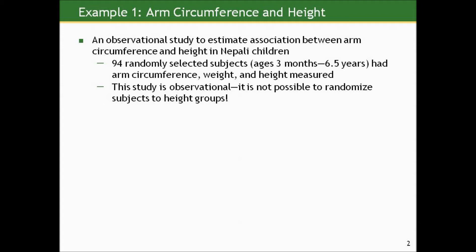Here's an observational study. This was actually done in Nepali children, and one of the aims was to look at the relationship between arm circumference and height in Nepali children — how they were growing and how their anthropometric measures were correlated, and they wanted to compare these to children from other populations. Let's suppose we looked at 94 randomly selected subjects from the study who ranged in age from 3 months to 6.5 years, and they had had their arm circumference, weight, and height measured.